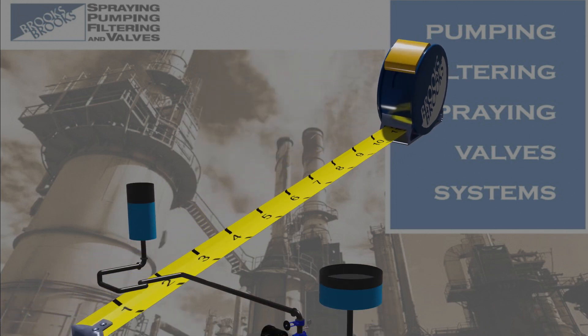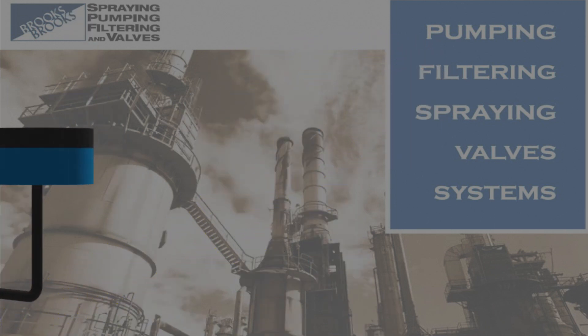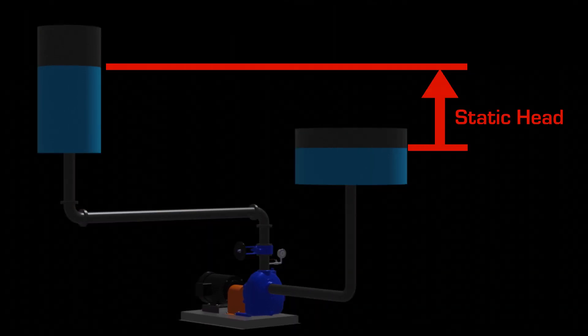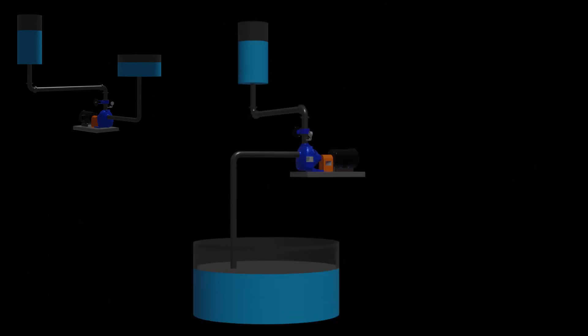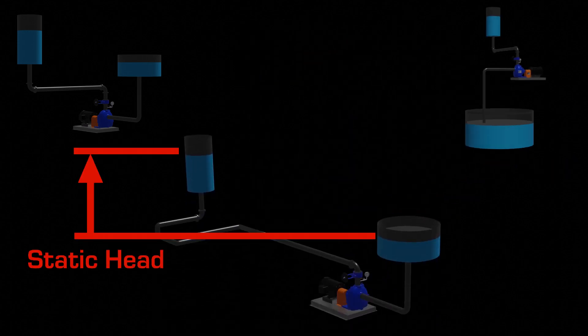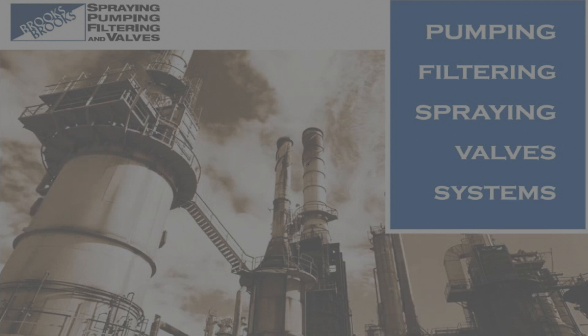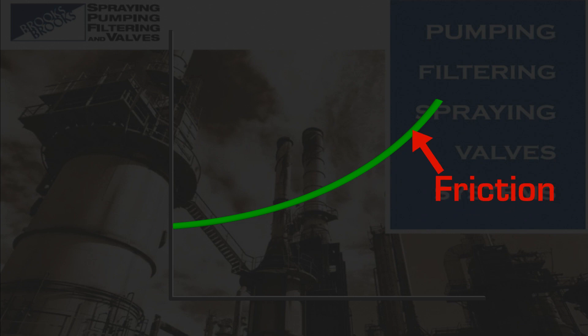Static head is easy to calculate — all you need is a tape measure or an accurate drawing of the system. The vertical distance from the source of the liquid to its highest point in the system is the static head. Be careful of piping systems that undulate, as siphons may develop. We will cover more about siphons in a later session.